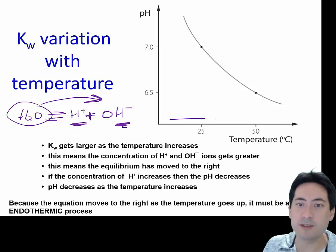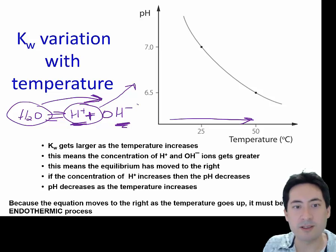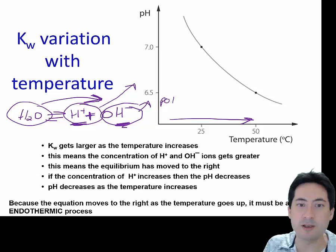So when you're increasing the temperature, you're actually causing more of this breakage and so you're causing the pH to decrease. What's interesting is that you're also increasing the OH, the pOH concentration, so you still have a neutral solution.